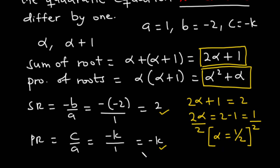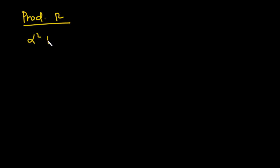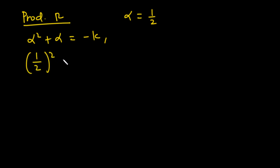For the product of roots, we have alpha squared plus alpha equal to negative k. Substituting alpha equal to 1 over 2, we get (1 over 2) squared plus 1 over 2 equal to negative k, which gives 1 over 4 plus 1 over 2 equal to negative k.